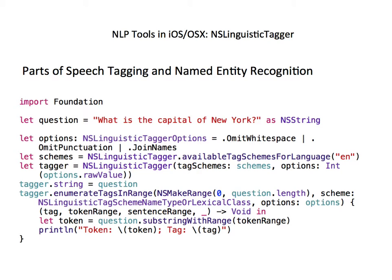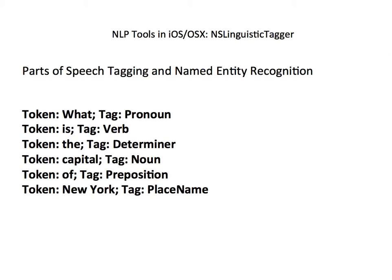Back to the code. Now that we have the options and schemes specified, we're ready to create the linguistic tagger object and give it the string we want to analyze. Then we use the enumerateTagsInRange function to analyze the string. Here we're interested in the parts of speech and named entities. The block gives us the tag for the token and the token range, which we use to create a substring with the token. We print the result for each token, and you can see that NSLinguisticTagger has given us the correct parts of speech for each word token, has recognized New York as a place name, and returned it as a single token.